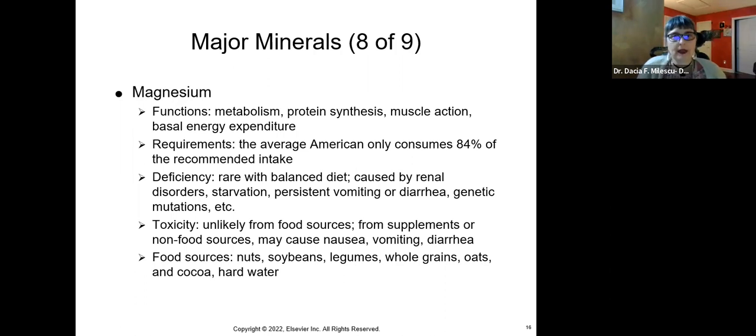But it does occur, especially if you have renal disorders. If you're anorexic or you're vomiting long-term or you have long-term diarrhea, meaning for more than three to four days, right? And then genetic mutations, which is rare. So magnesium, where do you get it from? Nuts, soybeans, legumes, whole grains, oats, cocoa, and hard water apparently is high in magnesium. So super important to get enough magnesium. Too much, bad. Too little, bad. So nice little balance there.